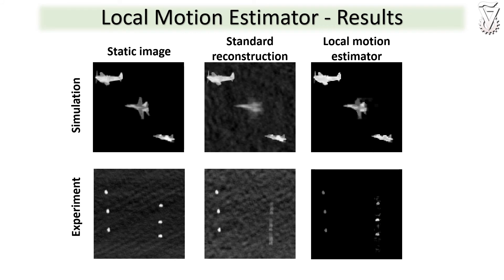In this slide, you can see some results of our local motion estimator. In the first row, you can see a simulation constructed out of two static airplanes and one dynamic airplane that moves during imaging. And you can see how our local motion estimator is able to remove the artifacts from the background and recover motion blur.